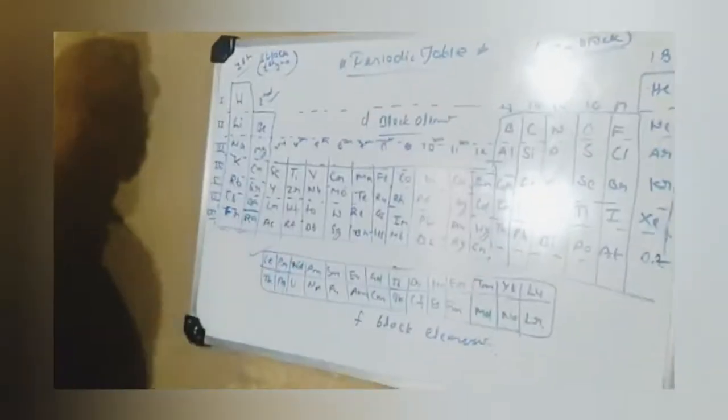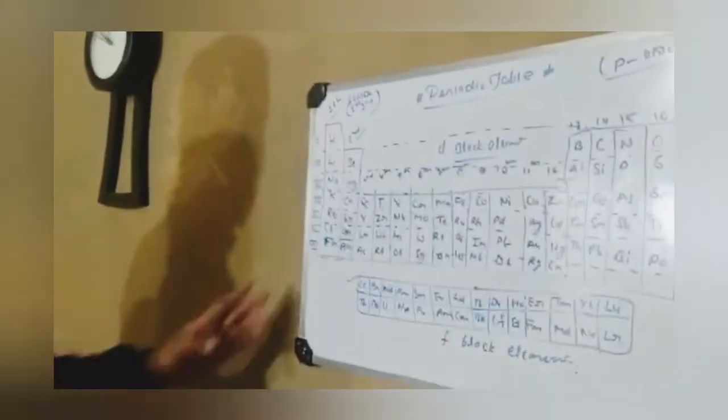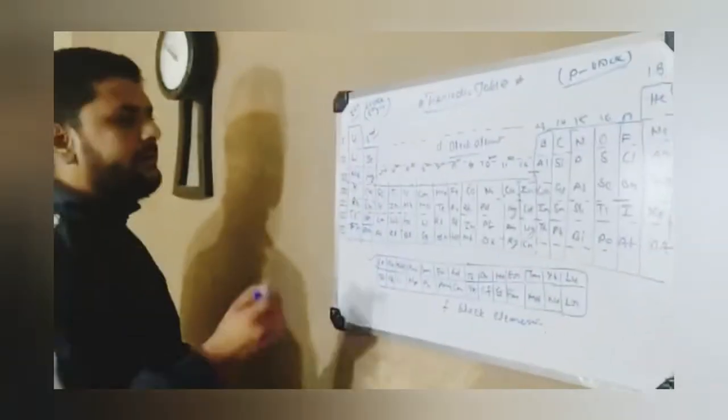Sixth group to 18th group. Now we are talking about vertical columns. Horizontal columns are periods. This periodic table contains seven periods and 18 groups.